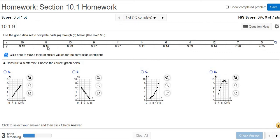In this problem we have a bunch of x and y ordered pairs, and the first part of this question wants us to construct a scatter plot.